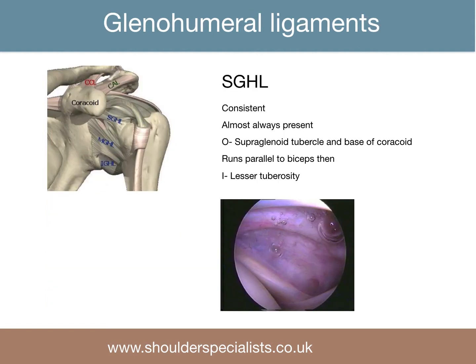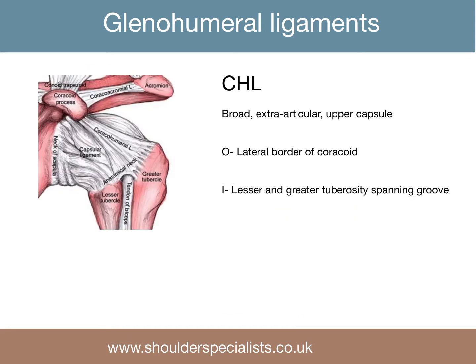The glenohumeral ligaments are essentially thickenings of the capsule, and pass from the anatomical neck of the humerus to various parts of the labrum. The superior glenohumeral ligament is the most consistent and is present in the vast majority of people. It originates at the superior glenoid tubercle, but also at the base of the coracoid, and runs parallel to the biceps and inserts onto the lesser tuberosity. The coracohumeral ligament originates from the lateral border of the coracoid and inserts on the lesser and greater tuberosities, spanning the groove.